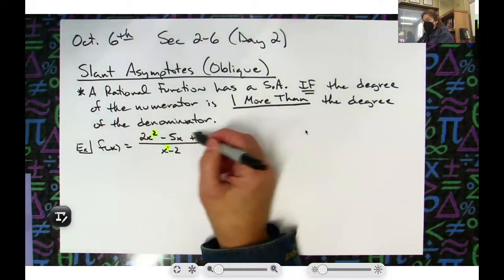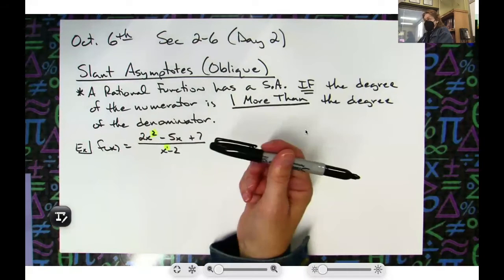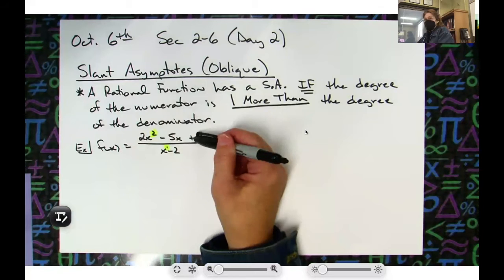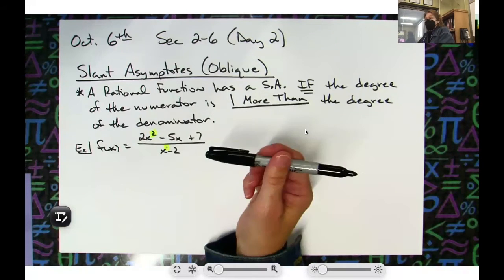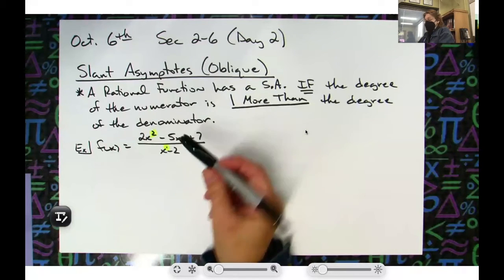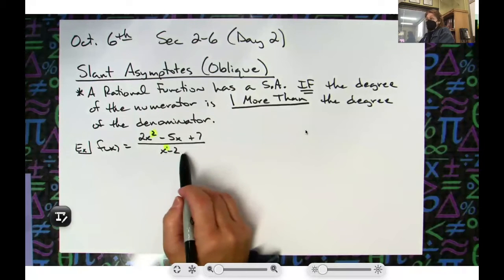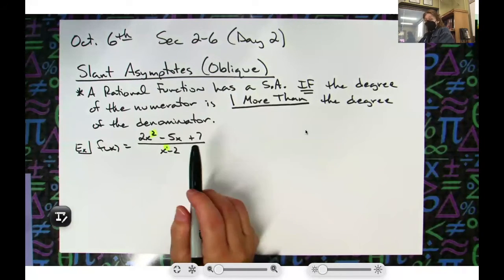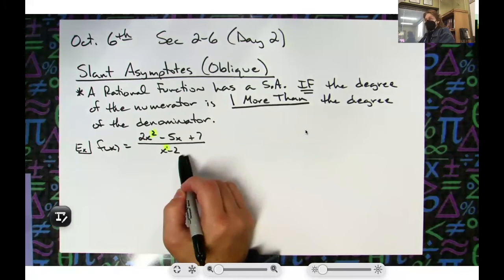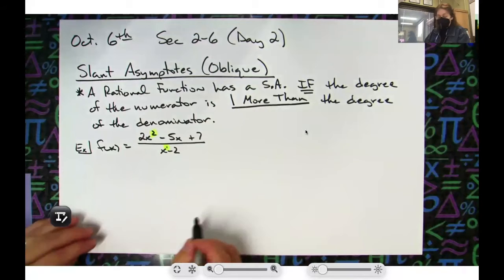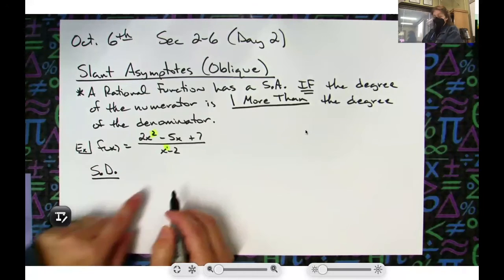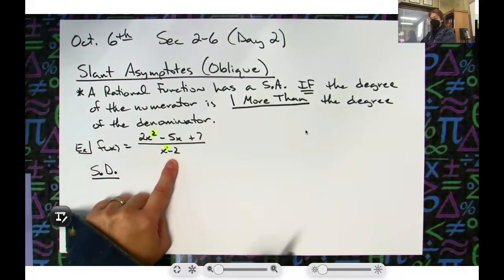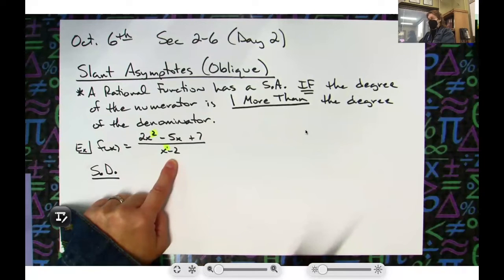The way to find a slant asymptote is to divide the numerator by the denominator. You don't want to do full polynomial long division — as a shortcut, you can use synthetic division as long as the denominator is something like x plus 2, x minus 5, or x plus 4. So for synthetic division, whatever is in the denominator — here it says x minus 2 — you use the opposite sign, so instead of negative 2 you use positive 2.